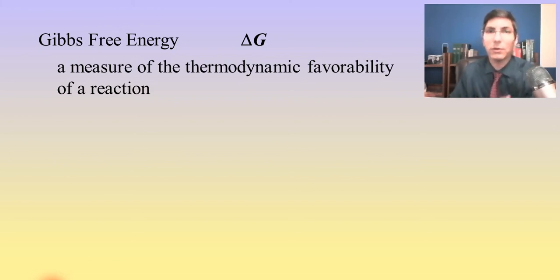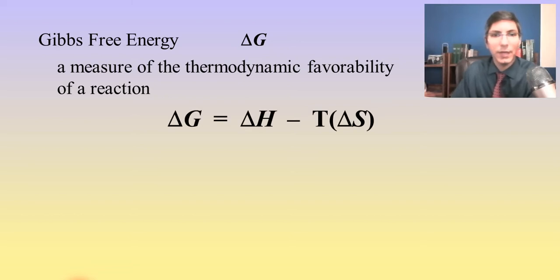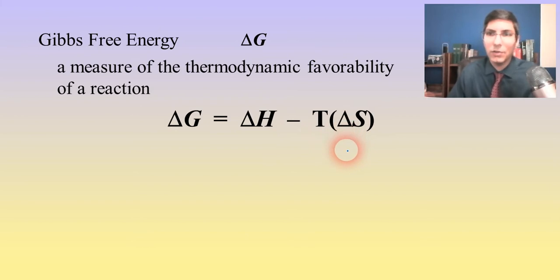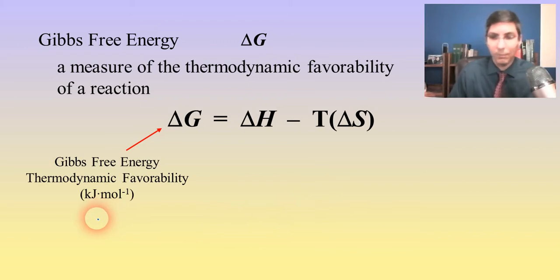Delta G is an actual numerical measure of the thermodynamic favorability of a chemical reaction. The way that we calculate it most commonly is with this equation: delta G equals delta H minus T delta S. Delta G is the Gibbs free energy — thermodynamic favorability — and it's in kilojoules per mole.